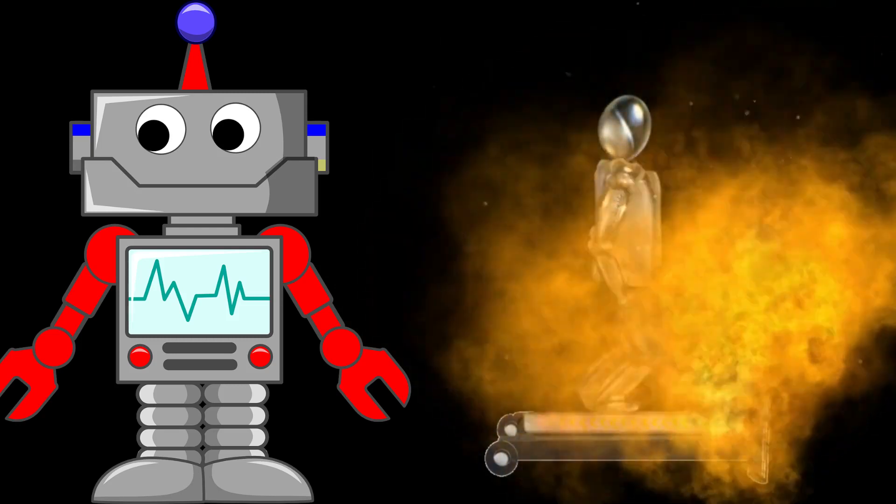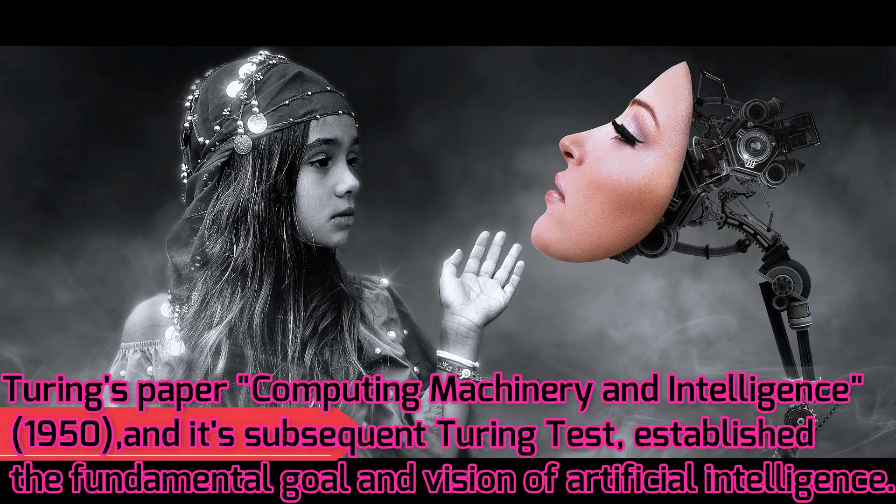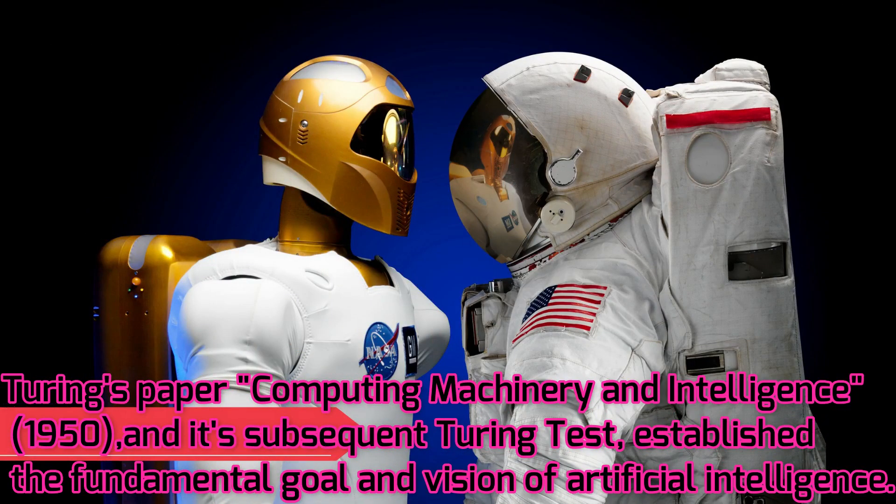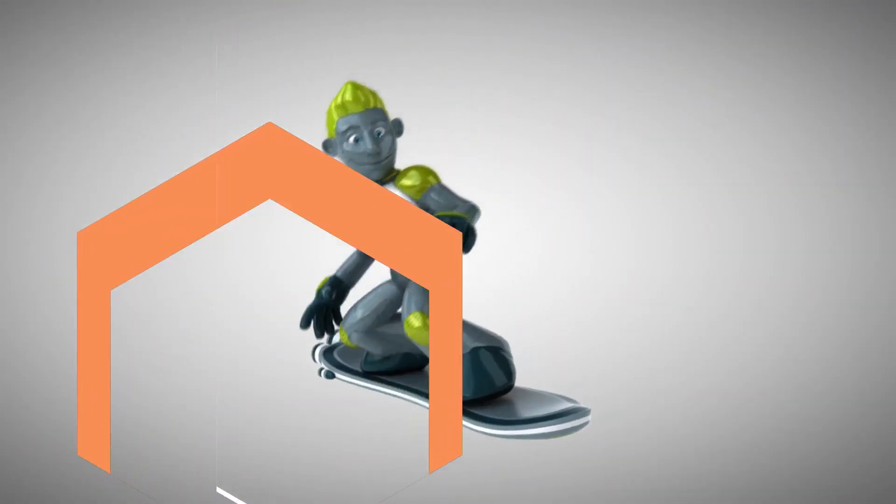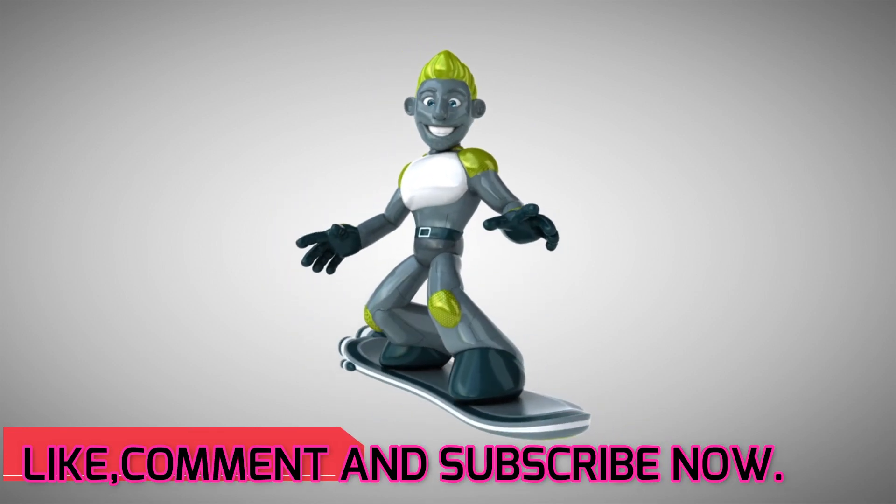Turing's paper Computing Machinery and Intelligence, and its subsequent Turing test, established the fundamental goal and vision of artificial intelligence. At its core, AI is the branch of computer science that aims to answer Turing's question in the affirmative.